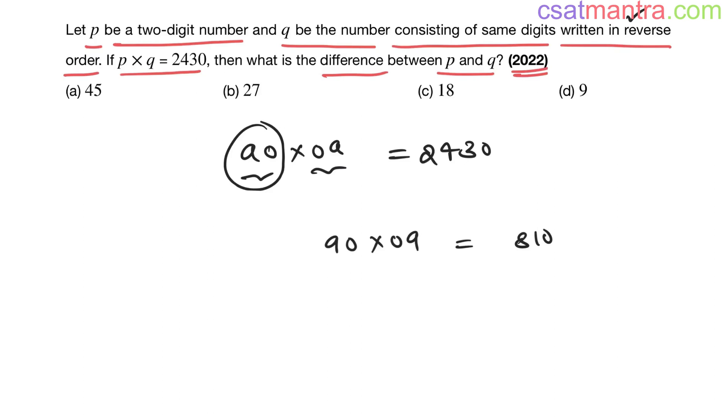You know in number system, if there is a product, I used to, if there is a five in it, I separate five and then two so that I can write zero at the end. Five into two is ten.